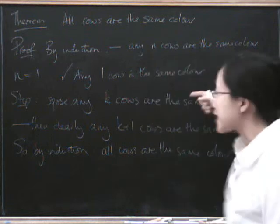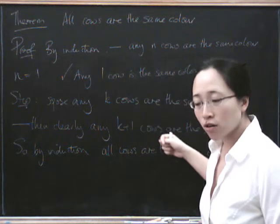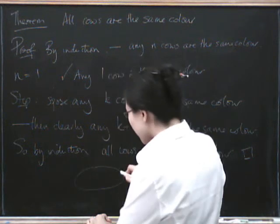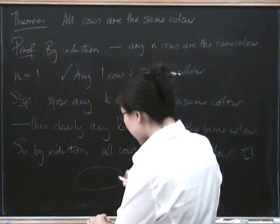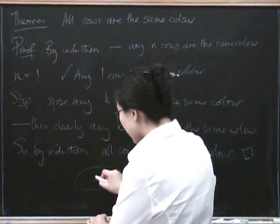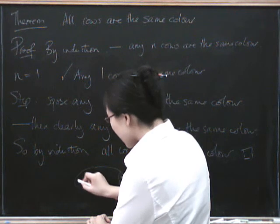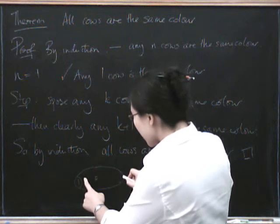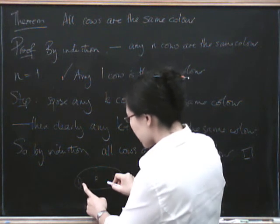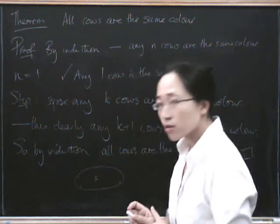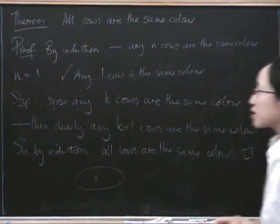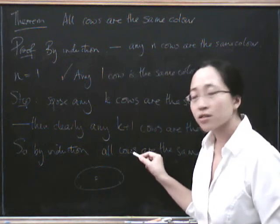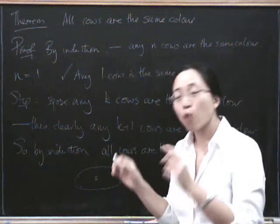You might think that this step is wrong, but there's nothing wrong with it. If I've got k plus one cows — here's one cow and here's the rest of the k cows — I know all these ones are the same color. If I separate off one cow over there instead, I know all these are the same color by the induction hypothesis, and that means they all have to be the same color. That's not the problem.